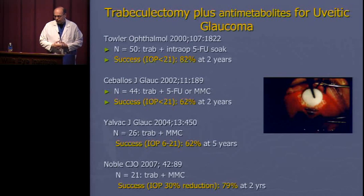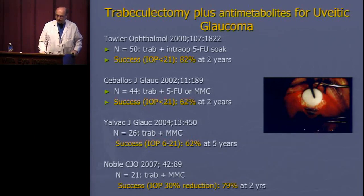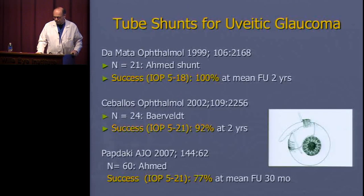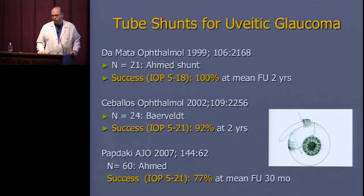Trabeculectomy for uveitic glaucoma has a success rate of 62–82% going out several years, though not matching primary glaucoma results due to chronic inflammation causing subconjunctival fibrosis with possible late pressure elevation. Tube shunts are probably more successful long term, but at Wills we tend to do trabeculectomy before tubes because if a trab fails you can do a tube shunt, whereas doing a trab after a tube shunt is very difficult. Phaco-trab combined surgery also shows reasonable results, with one study reporting 85% success at roughly two years.